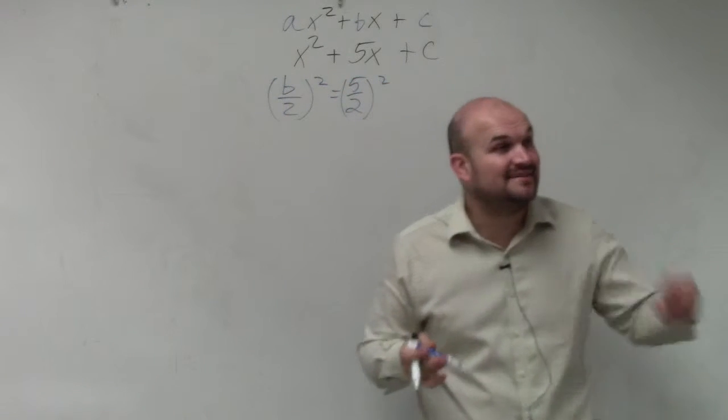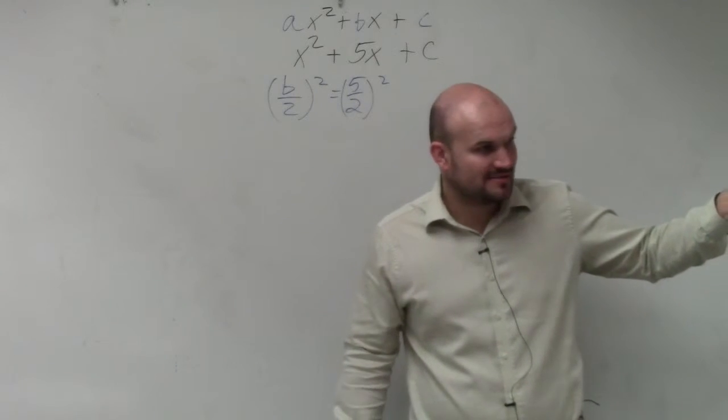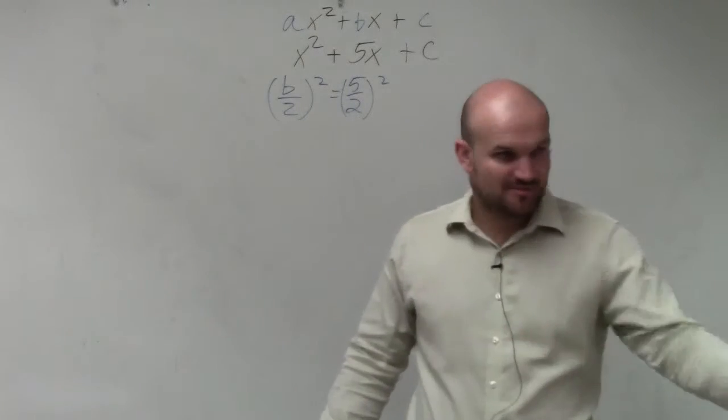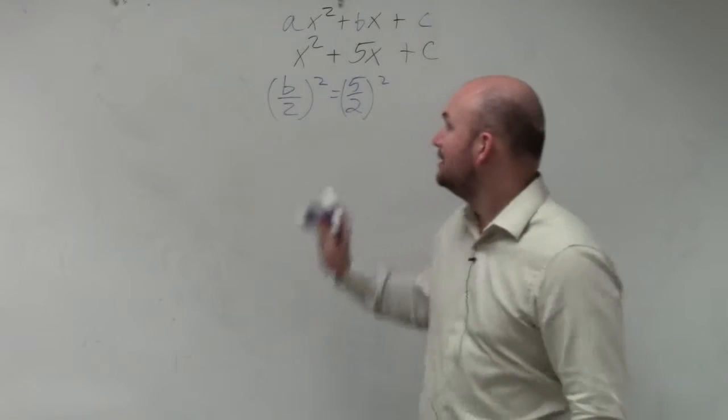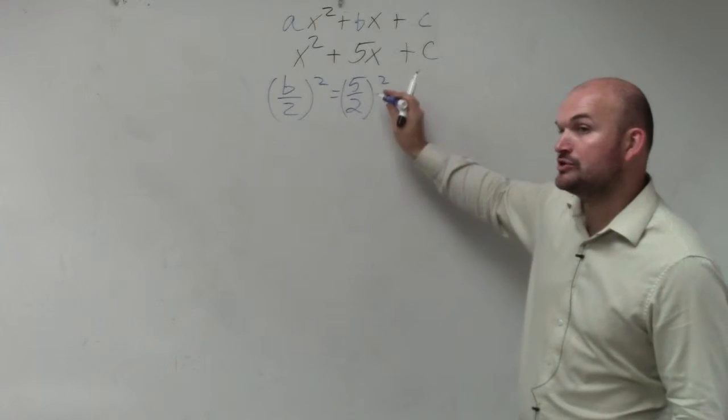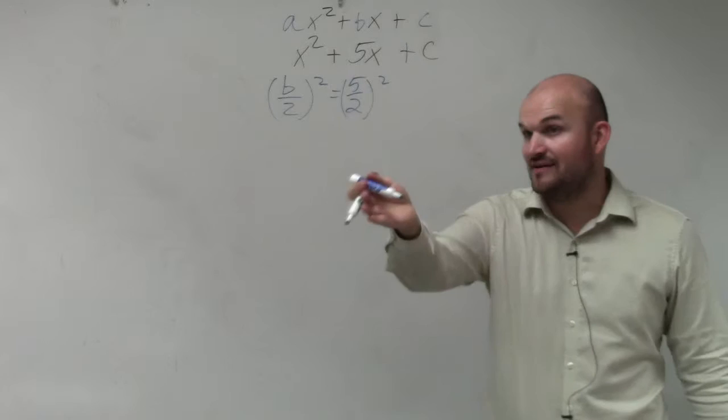Unfortunately, though, 2 does not evenly divide into 5, correct? So please do not give me the decimal version. Just leave it as a fraction. So 5 divided by 2, when you're squaring that, that's basically 5 halves times 5 halves, which is?